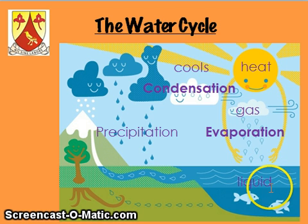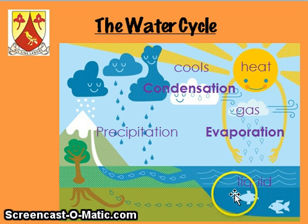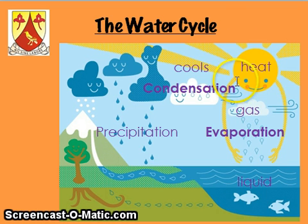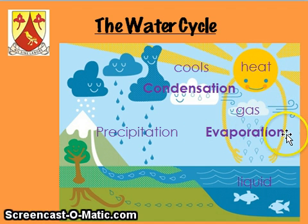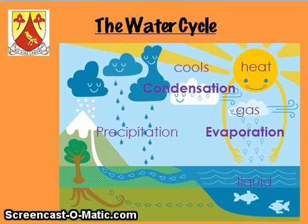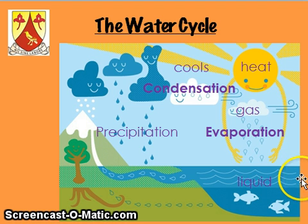We've got a little picture of the sea and the water in the sea is liquid. That's quite important. When the sun heats up that water — the sun provides the heat — evaporation takes place. Remember, evaporation is a process. It's when liquid changes into a gas. You can see that the liquid is evaporating and changing into a gas.